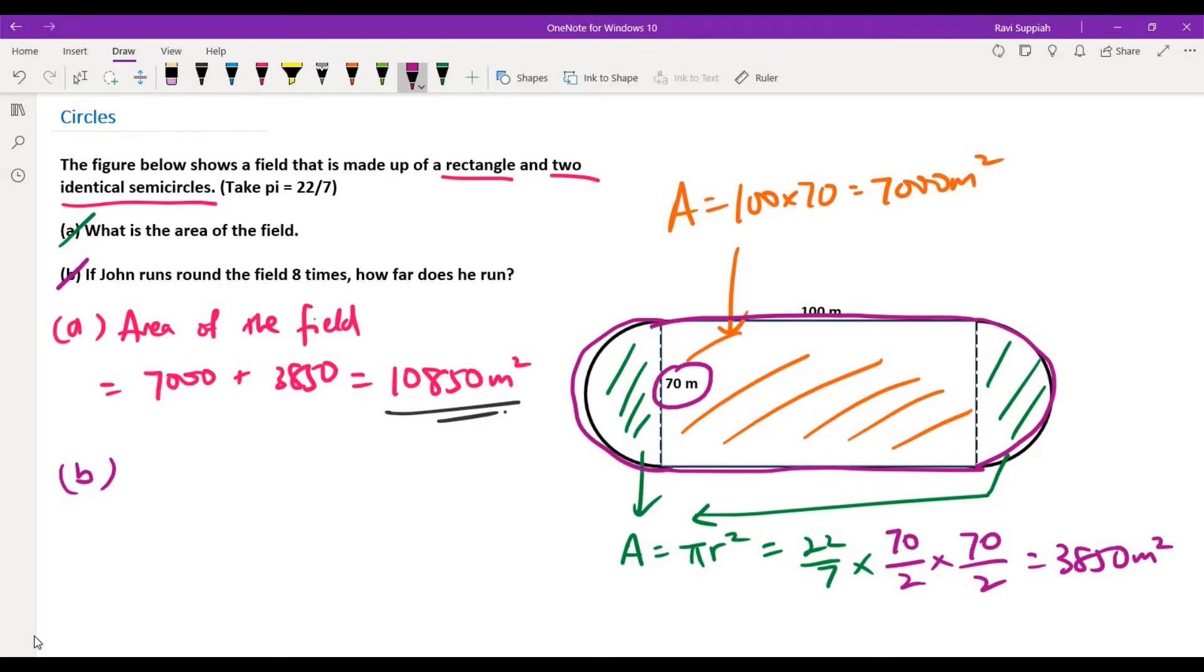These two portions here, this portion here and this portion here will be 100 and 100. Now for this semicircle portion, since we know that they are both identical semicircles, we can again treat them as the circumference of a complete circle.